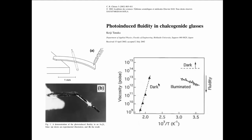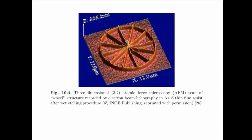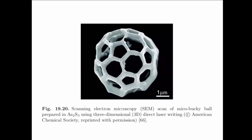Photo-induced fluidity in chalcogenide glasses: when arsenic sulfide is illuminated, its fluidity increases. A flake illuminated and pushed at one end bends at the illuminated point. This is not a thermal effect — the thermal dependence of viscosity in the dark and under illumination have opposite dependencies. This optical effect has found applications in fabricating optical devices and diffraction gratings.